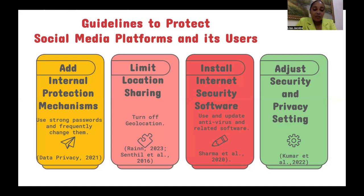Fourth, adjust security and privacy settings. You must keep personal information secure. The more information posted makes it easier for someone to use that information to steal identities, access personal data, or even commit other crimes such as stalking. Remember to be cautious on social networking sites. Even links that look like they come from friends can sometimes contain harmful software or be part of a phishing attack. If you are at all suspicious, don't click it. Contact your friends to verify the validity of the link first.